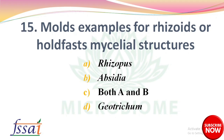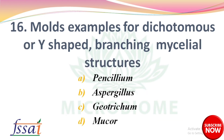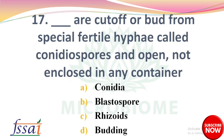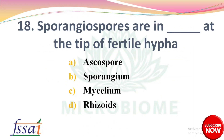Next: Molds — example for rhizoids or root-like mycelial structures — options: Rhizopus, Absidia, both A and B, Geotrichum. The right answer is option C. Next: Molds — example for dichotomous or Y-shaped branching mycelial structures — options: Penicillium, Aspergillus, Geotrichum, Mucor. The right answer is option C, Geotrichum. Next question: Dash are cut off or borne from special fertile hyphae called conidiophores and are not enclosed in any container — options: conidia, blastospores.